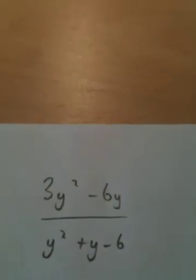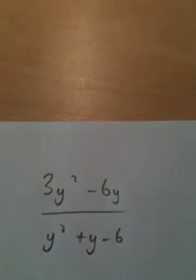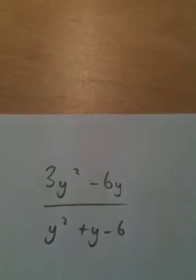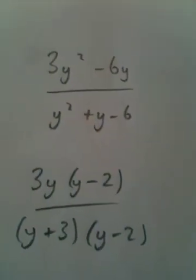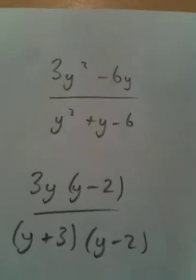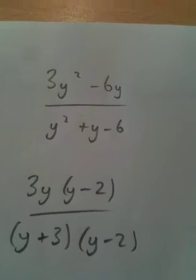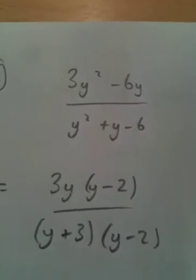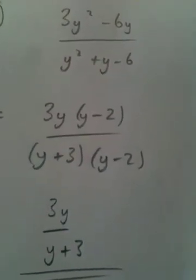And on the bottom, that will be a double bracket question. Two numbers multiply together to make negative 6, add together to make plus 1. That will be y plus 3 times y minus 2. On a question like this, you're almost guaranteed that a term on the top will cancel with a term on the bottom once you have factorized. And indeed, it does here. We can cancel out the y minus 2s. And we just have 3y over y plus 3.